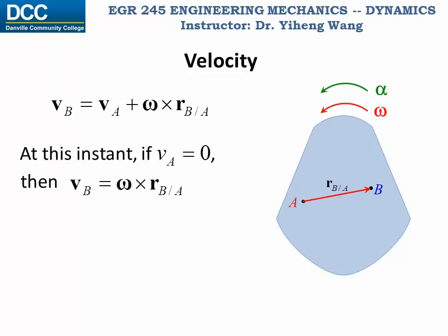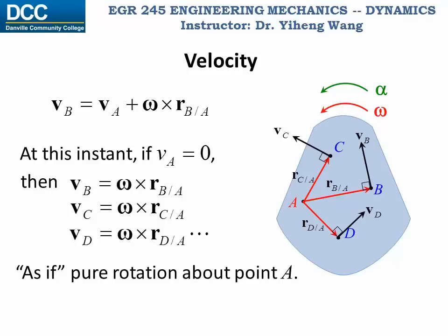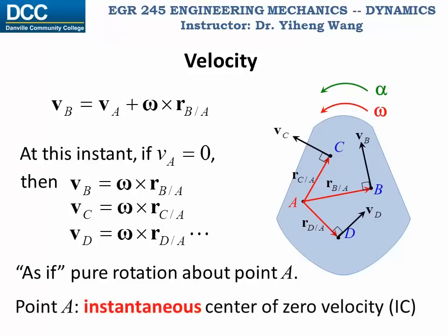Also, according to cross product rules, we can determine that the direction of the velocity of point B is perpendicular to its relative position vector. And for any other point on this rigid body — point C or D — we can write similar equations and draw similar conclusions. It is as if this rigid body is rotating about a fixed axis that passes through point A. In this case, point A is known as the instantaneous center of zero velocity.